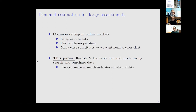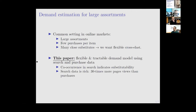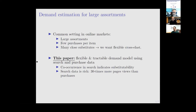What we propose is to add search data to purchase data, and we argue search data is particularly powerful in helping us understand substitution patterns - for two reasons. First, co-occurrence in search indicates substitutability relatively directly: if two products are always searched together, consumers deem them similar. Second, search data - meaning the identities of products a consumer looked at before purchasing - is much more abundant than purchase data. In our setting, we have 30 times as many product page views as purchases.